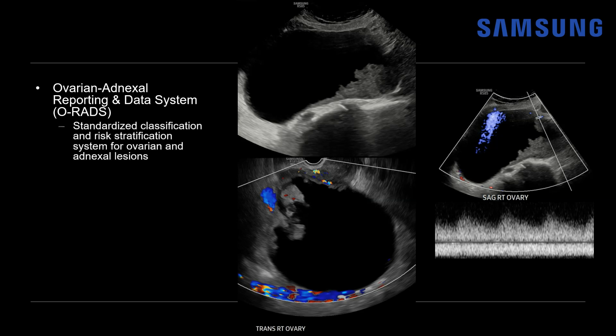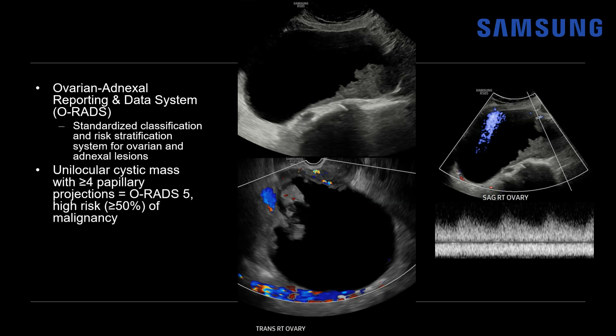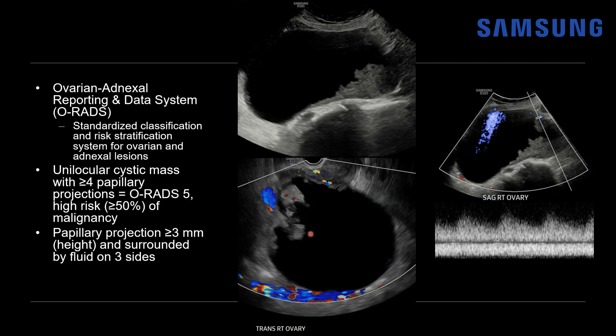ORADS is a standardized classification and risk stratification system for ovarian adnexal lesions. According to ORADS version 2022, a unilocular cystic mass with four or more papillary projections is consistent with an ORADS 5 lesion, which carries a high risk of malignancy greater than 50%. If it had fewer than four projections it would be ORADS 4 — still suspicious but lower risk. The ORADS definition of a papillary projection is a soft tissue component measuring three millimeters or greater in height and surrounded by fluid on all three sides.